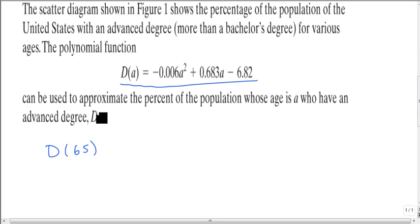So we plug in, wherever we see an a, we plug in 65: D(65) = -0.006(65)² + 0.683(65) - 6.82.